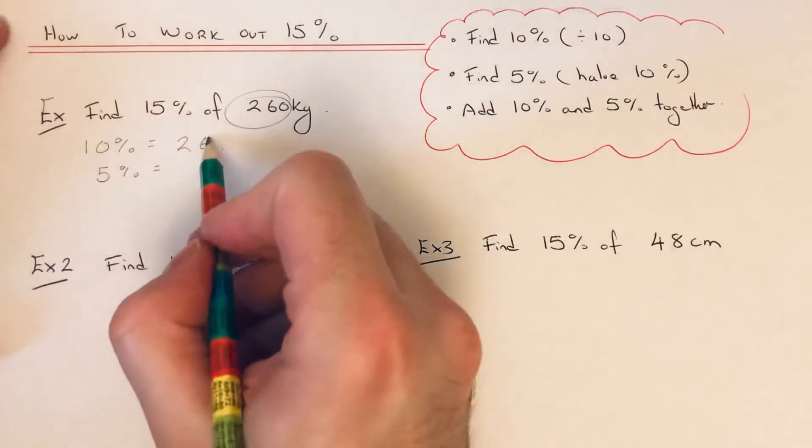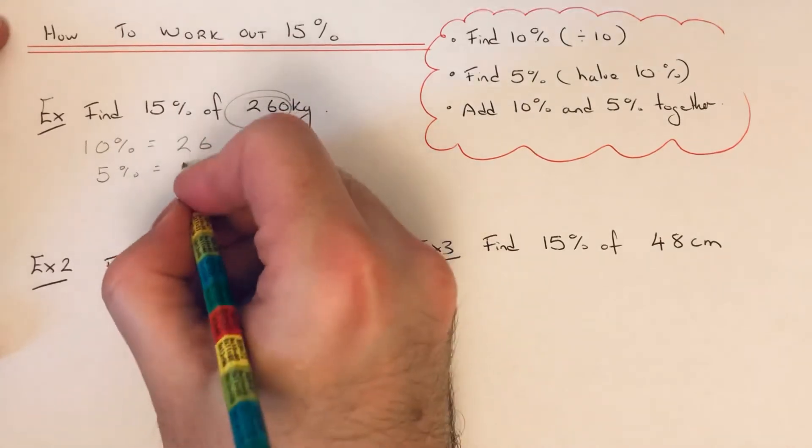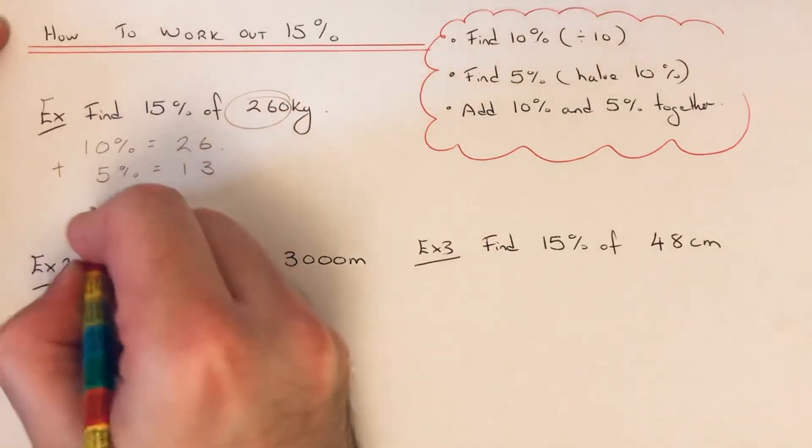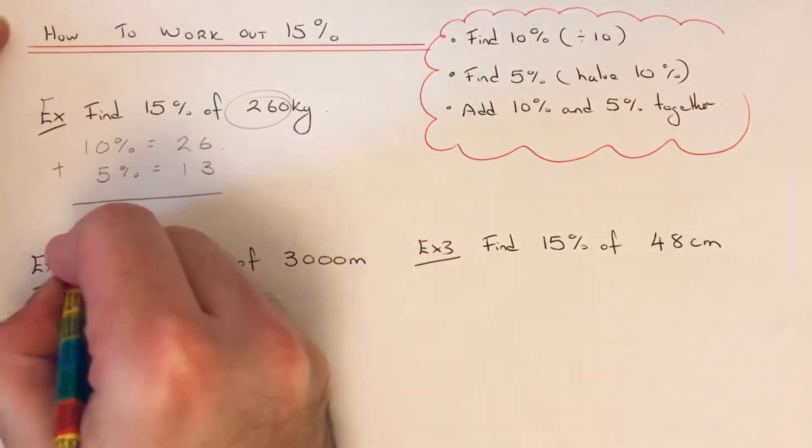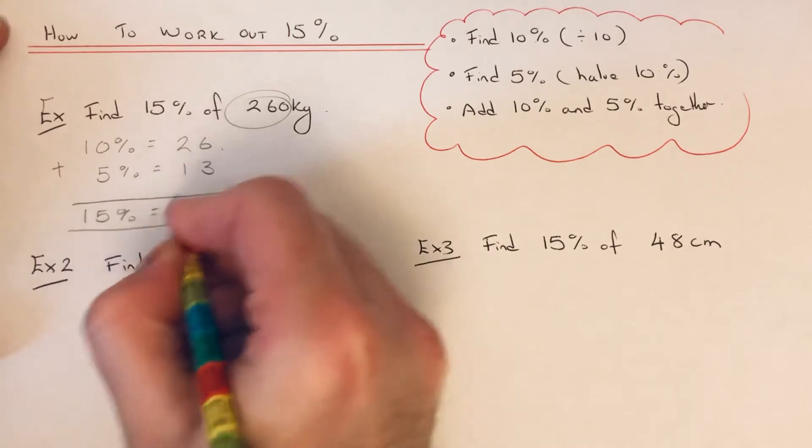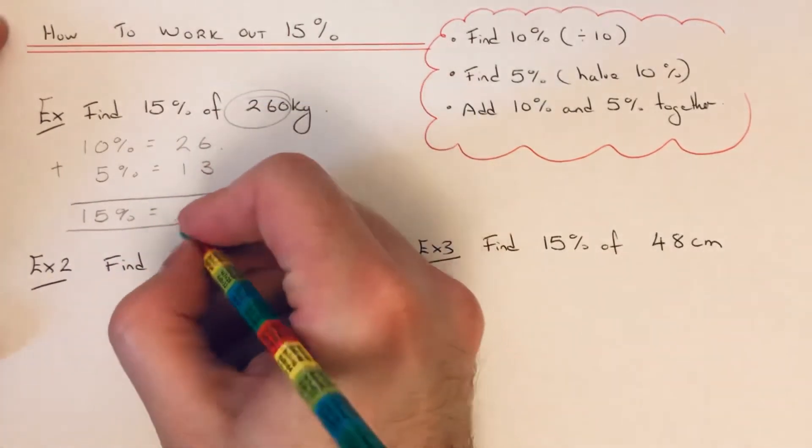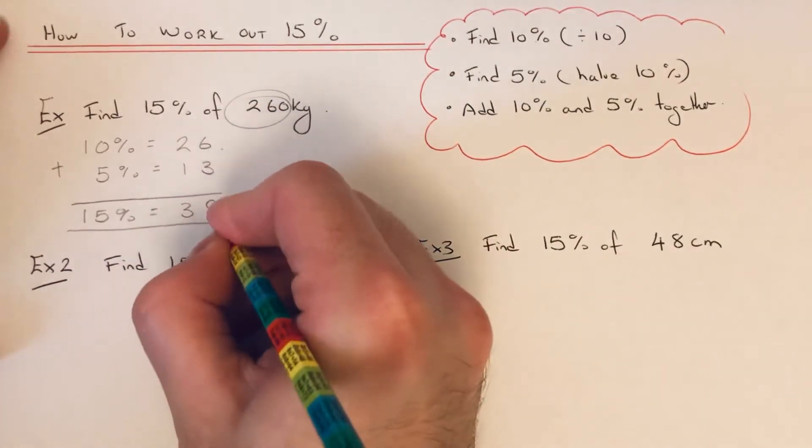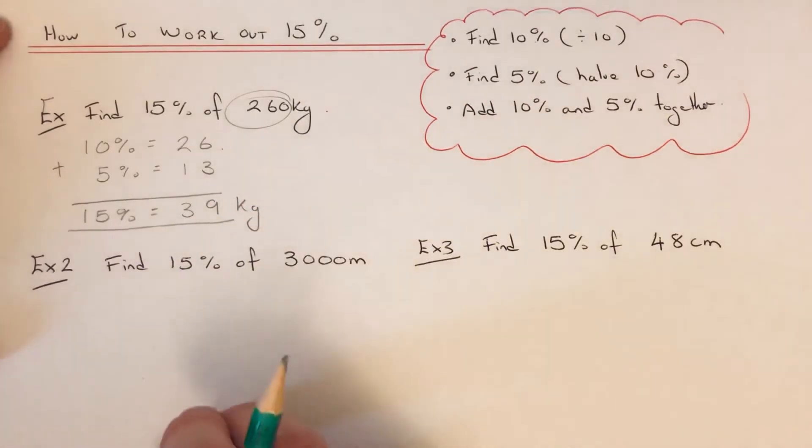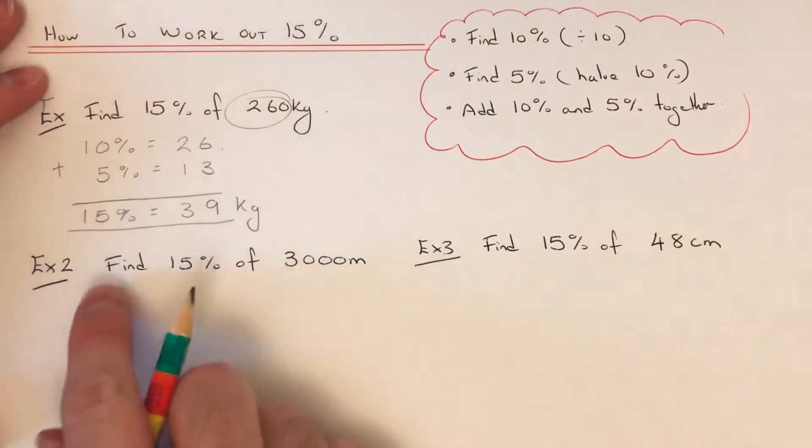5% will be half of 26, which is 13. If we add these two amounts up, that gives us 15%. So 26 and 13 is 39 kilograms. Let's have a look at the second example.